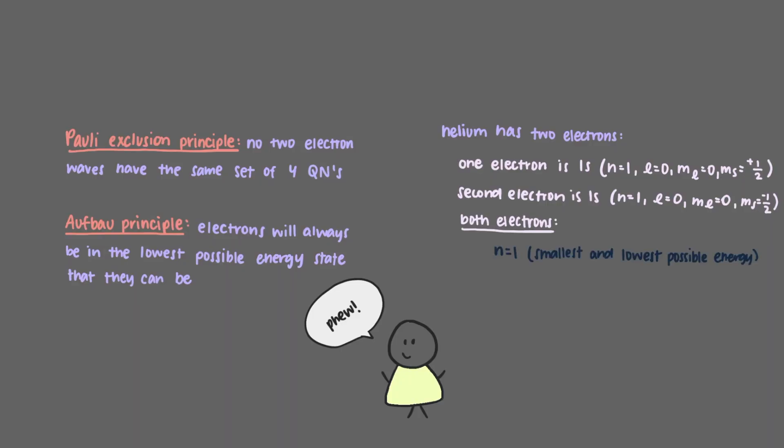So both of them are n equals 1, the smallest and lowest possible energy, l equals 0, no nodal planes, so s-shaped, and m sub l equals 0, because a sphere can't have multiple orientations in 3D. And one of them is m sub s equals plus one-half, and the other is m sub s equals minus one-half, so they have opposite spin numbers.